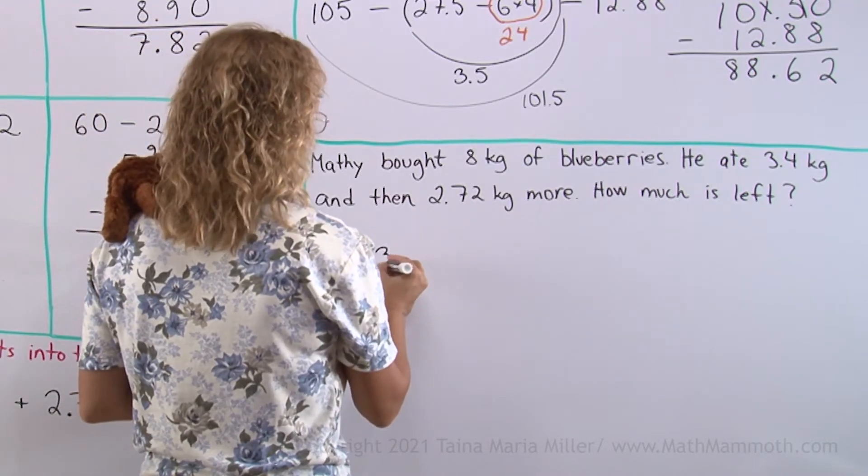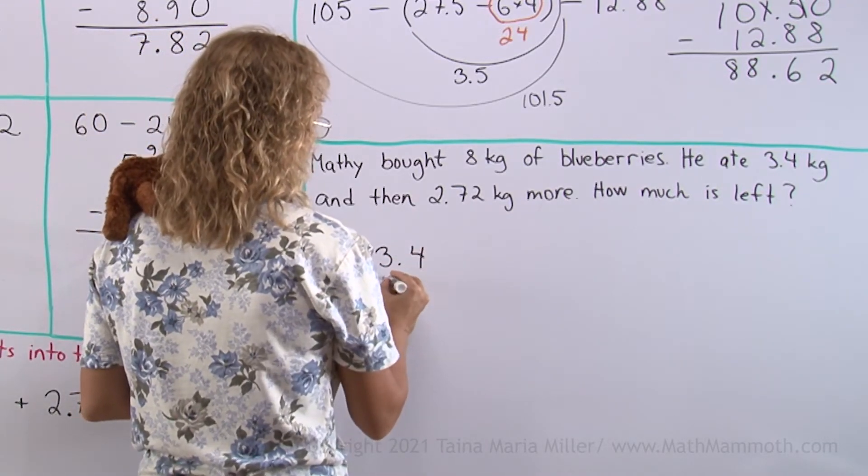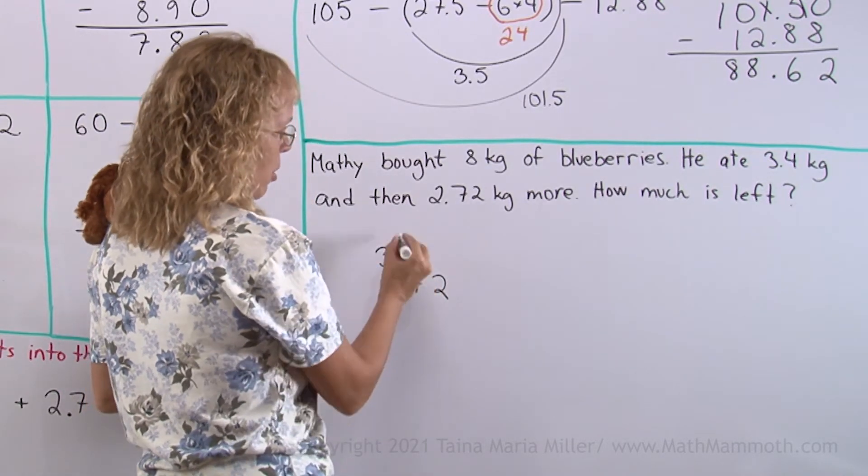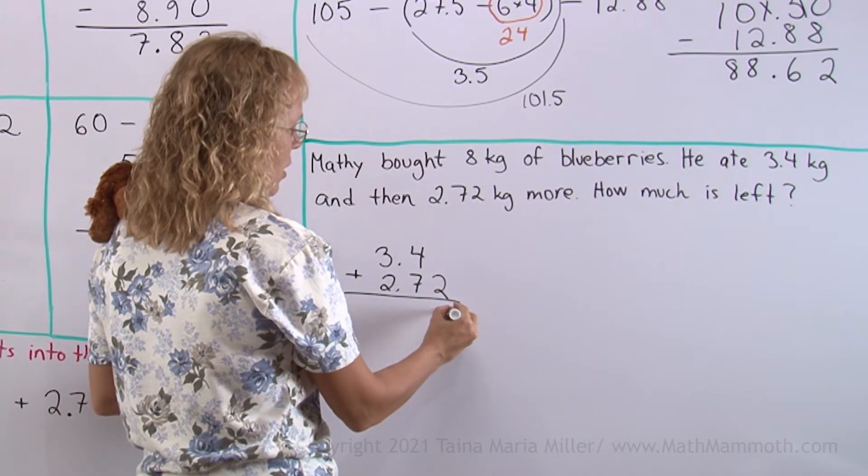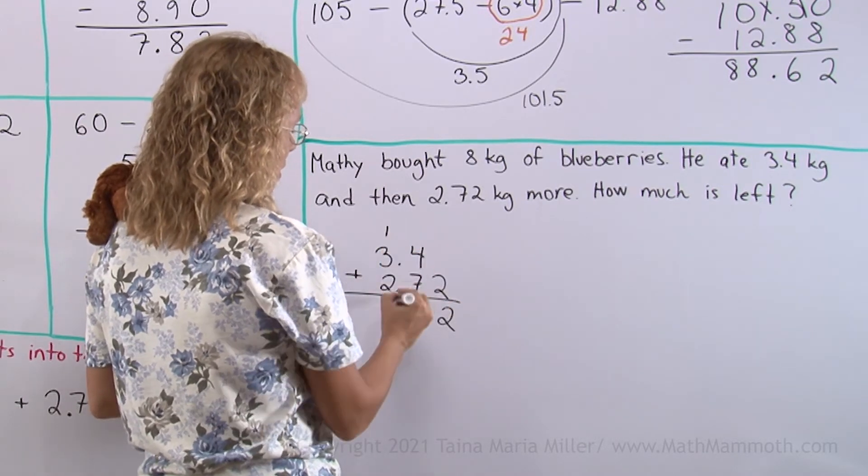3.4 plus 2.72. Line up the points and add here. You can imagine zero here. There's 2, 11, and 6.